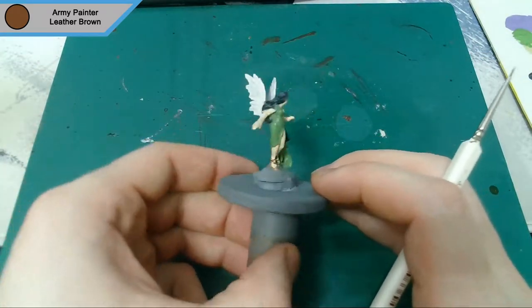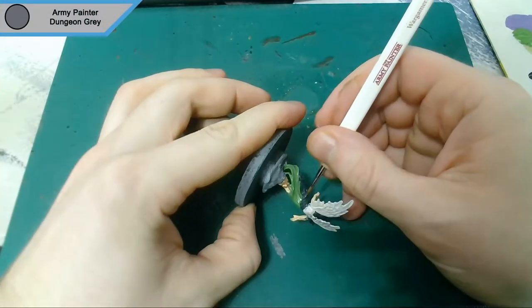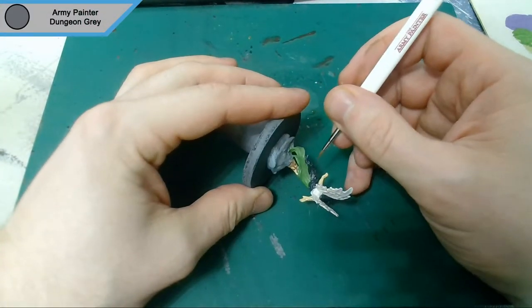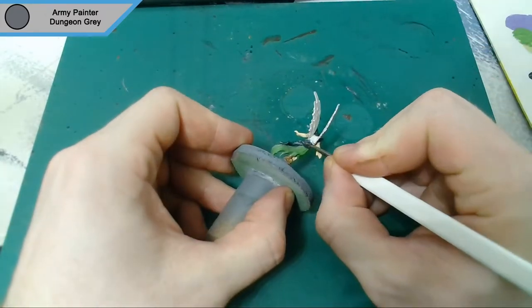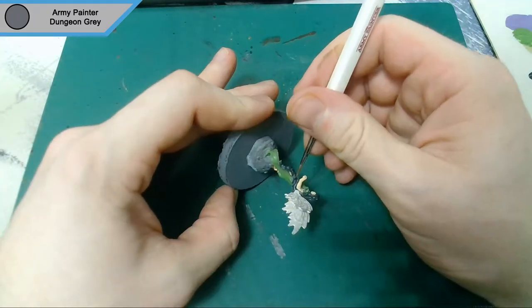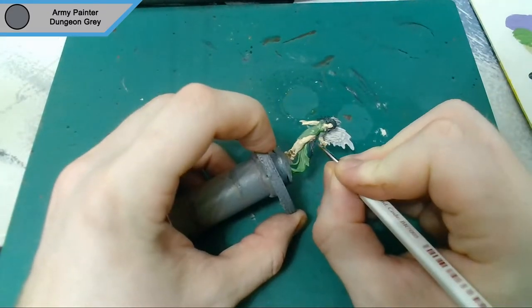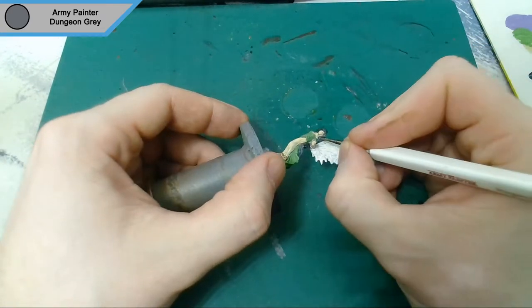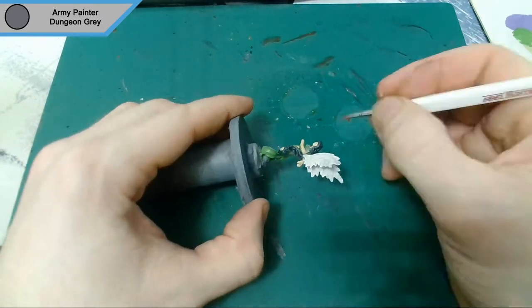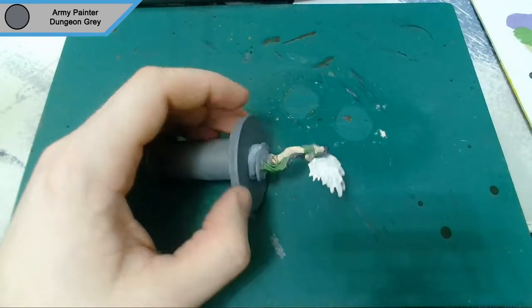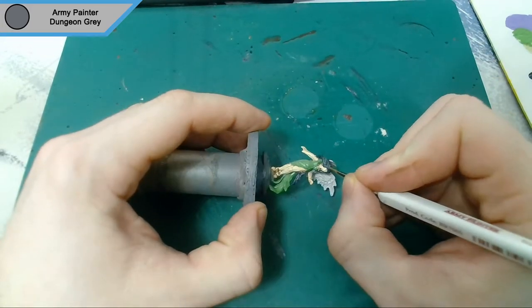Now we move on to the first highlight and this is dungeon grey. This is just a quick highlight for the hair. As it's dark hair and when I give it a dark wash it will become even darker, so a light grey over the top just sort of makes it look shiny, which is exactly what a highlight should be. The hair will still look black but it will have that highlight and depth which is what you want from the mini.